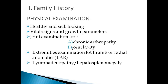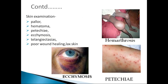Examine for organomegaly or lymphadenopathy, as malignancies or bone marrow diseases can cause thrombocytopenia along with decreased other cell lines. In skin examination, look for hematomas, petechiae (pinpoint hemorrhages), ecchymosis or bruising, and telangiectasias — blood vessel dilatation resulting in easy bruising and poor wound healing — seen in Ehlers-Danlos syndrome.